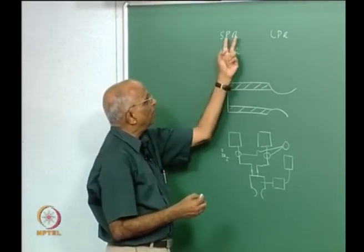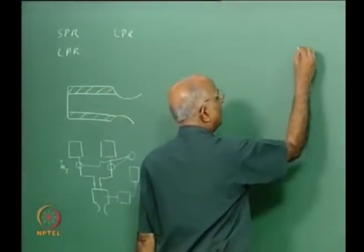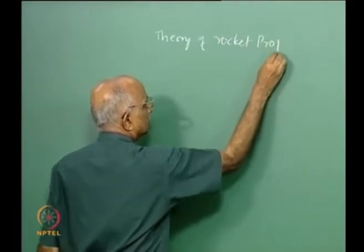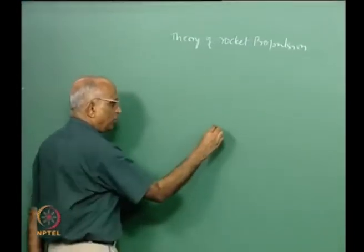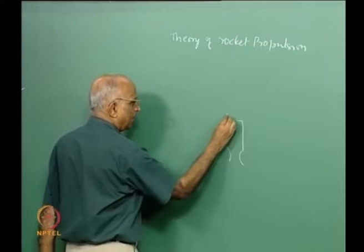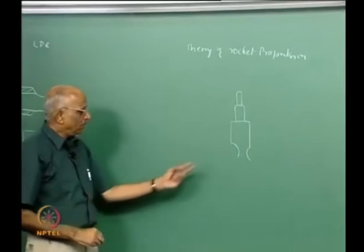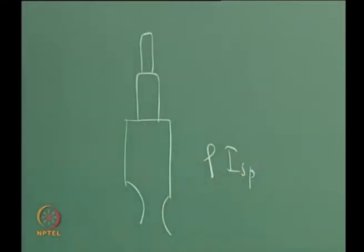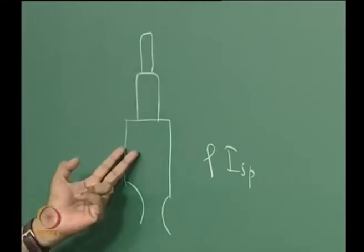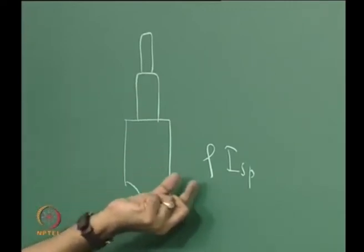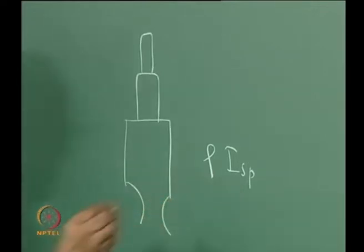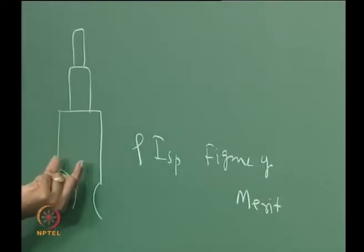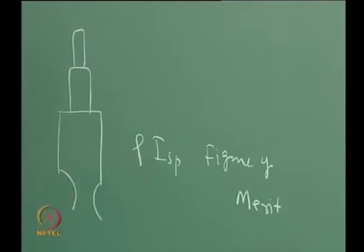Liquid propellant rockets are more versatile. When we studied the theory of rocket propulsion, we said boosters are those rockets used during takeoff and upper stage rockets are known as sustainers. For booster rockets, in addition to ISP, the term rho-ISP becomes important. The mass of the cases and upper stages become important, and under those conditions the product of the density of the propellants multiplied by ISP becomes a figure of merit. Therefore, whenever I choose the booster stages — the stages which first start off — it is essential to use dense propellants.